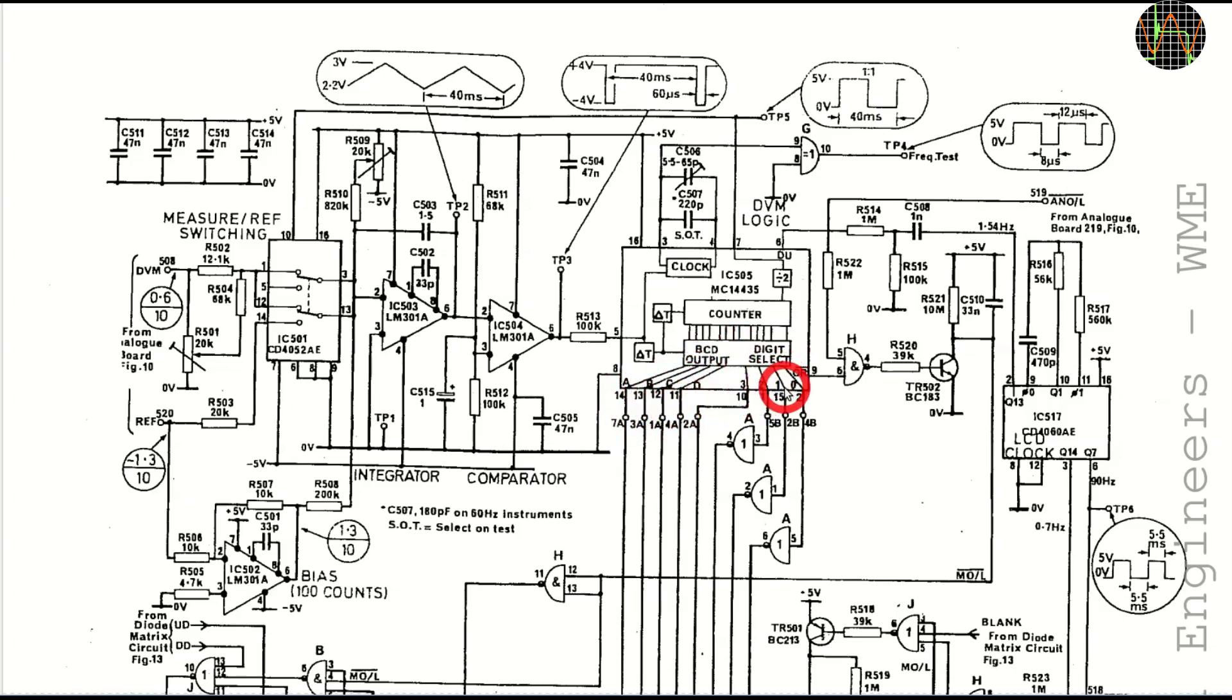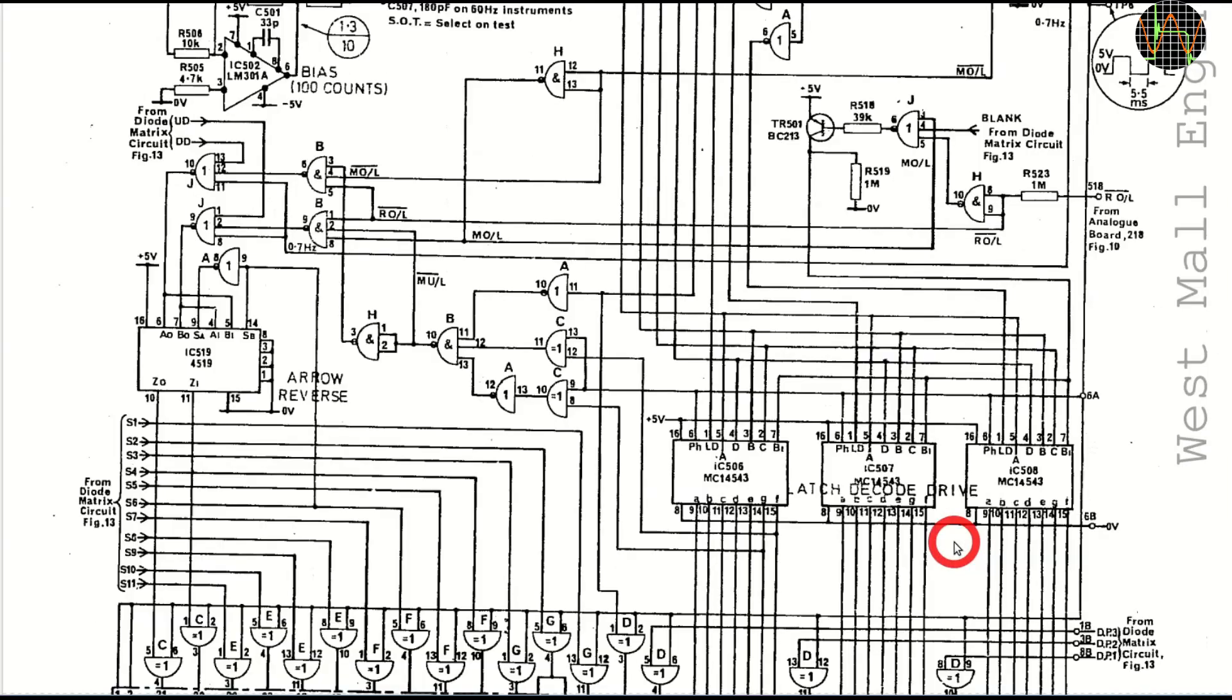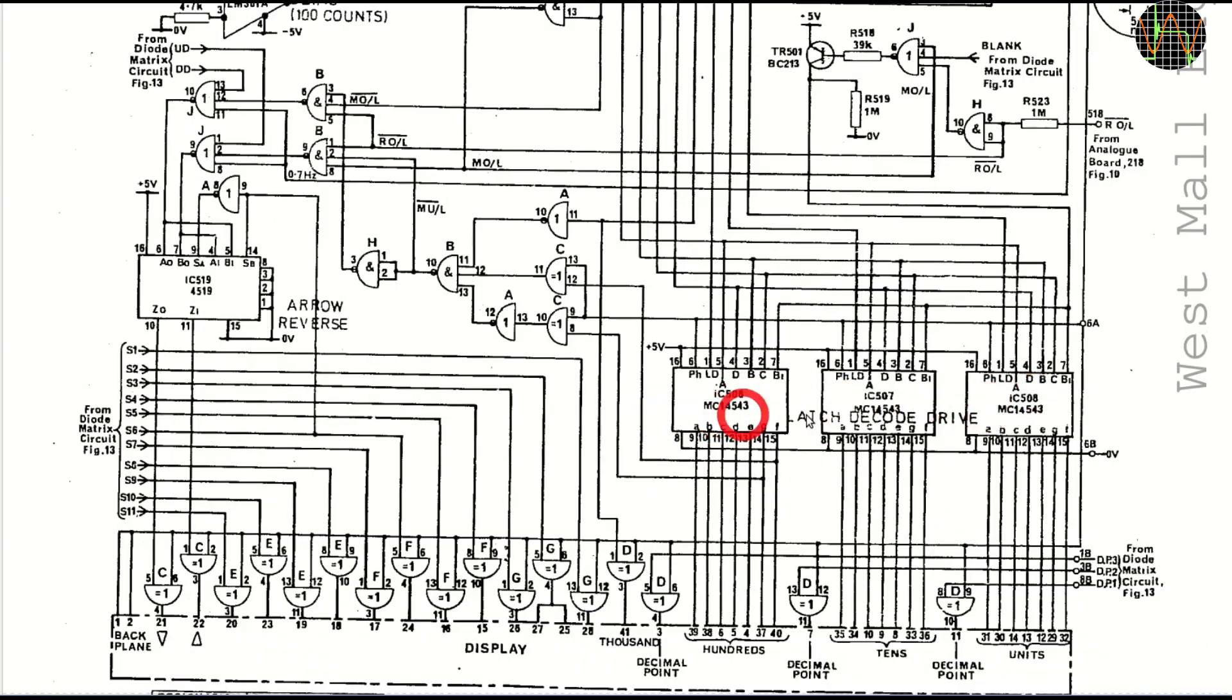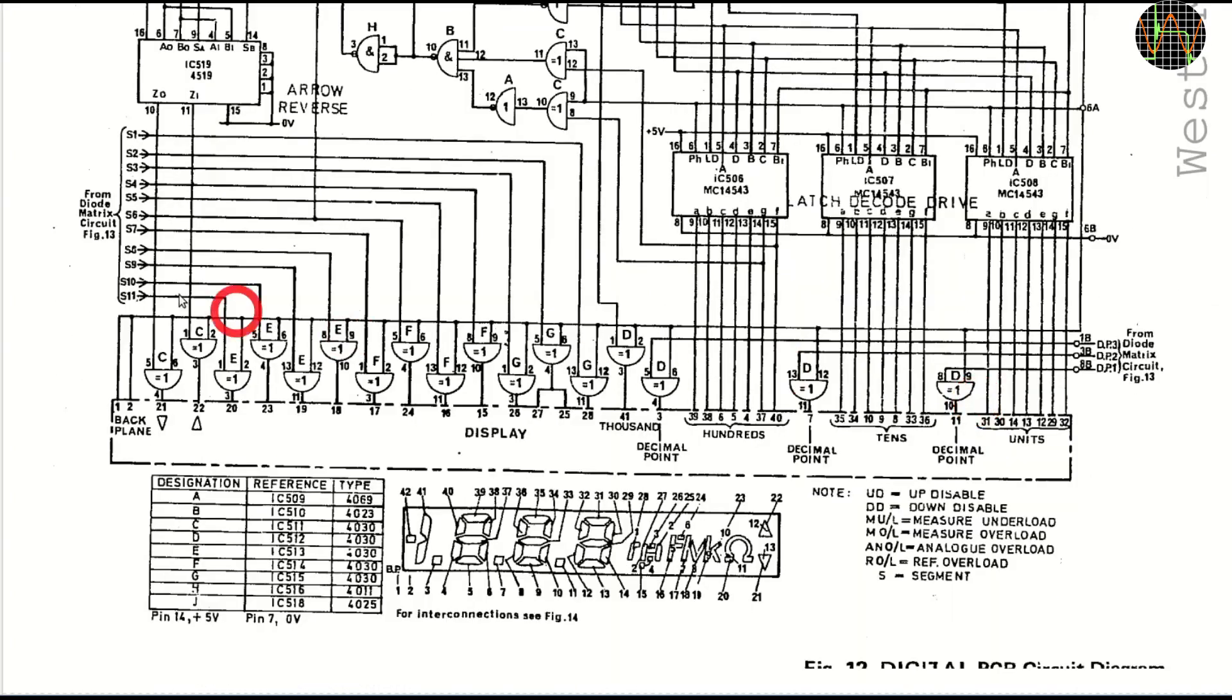On the right is the generator for creating a rectangular wave for the LCD. It runs at about 91 Hz. Next, we have 3 BCD to 7 segment latching decoders. There is no need for a 4th chip because the highest digit can only be 0 or 1 since the DVM can only do 0 to 1999. These signals and signals from the diode matrix which is on a different schematic then go to the display.